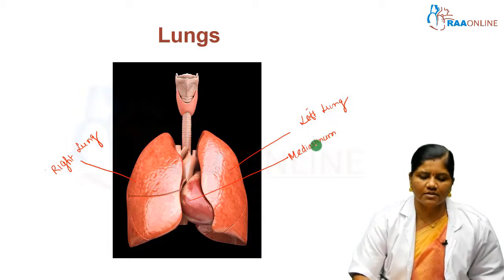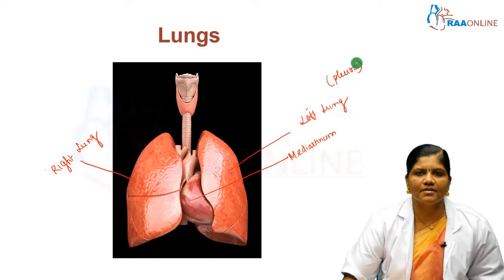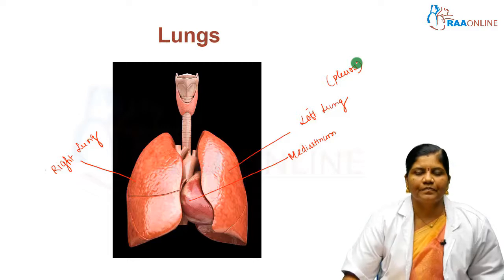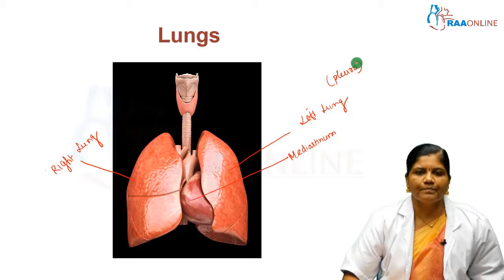The lungs are covered by a pleura. In adults, the lungs are grayish and spongy in nature as well as elastic in consistency — they sink in water. But in the case of stillborn, they float in water.